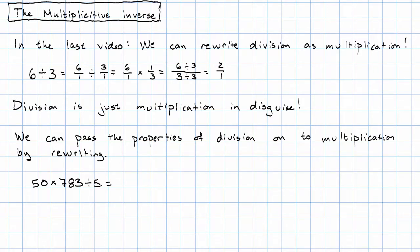I rewrite that as multiplication. I use the commutative property to switch the 783 and the one fifth. And the associative property says that I can go ahead and do this first. And if it makes things easier for me, I can even write it back as division now.